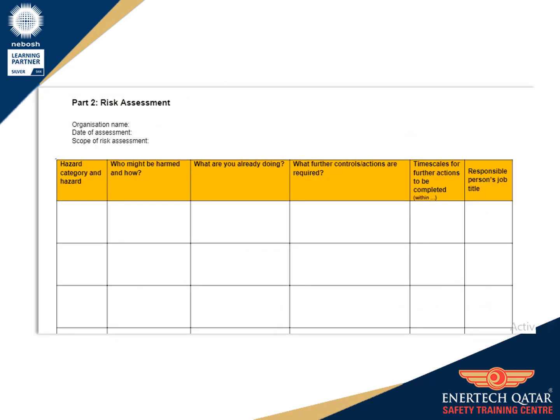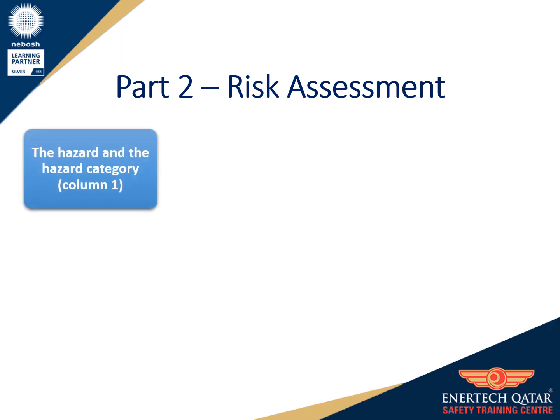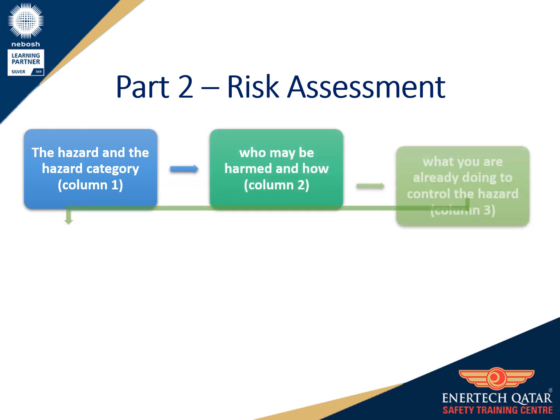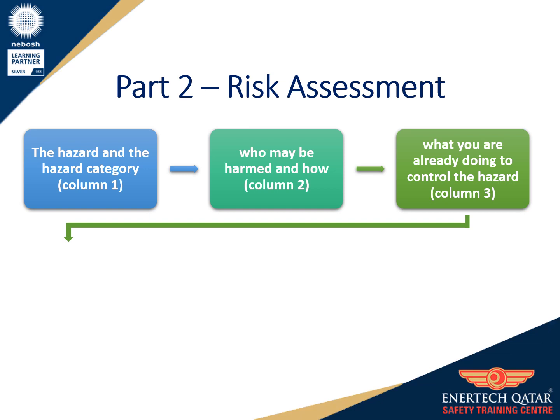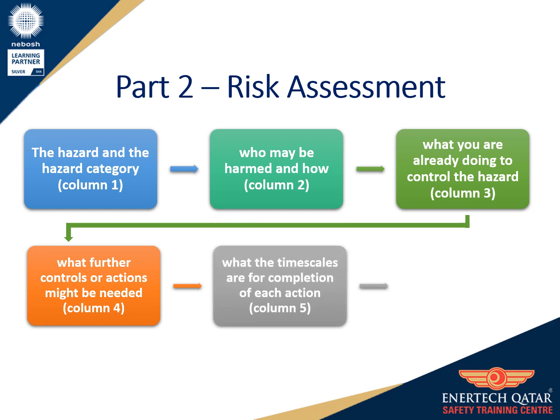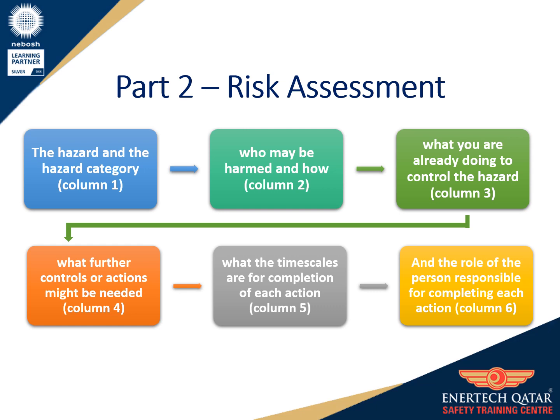This is how the risk assessment form looks like. It needs to be completed by carefully reading and following the NEBOSH guidance. Start by putting the organization name, risk assessment date, and risk assessment scope — where the assessment was carried out — in the relevant places at the top of the form. In column 1, mention the hazard and the hazard category. In column 2, who may be harmed and how? In column 3, what you are already doing to control the hazard. In column 4, what further controls or actions might be needed. In column 5, what the timescales are for completion of each action. And in column 6, the role of the person responsible for completing each action.